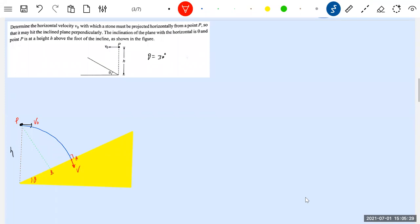I know how to solve this. It strikes normally. I think that is enough to solve this problem. So I'm going to resolve that initial velocity along the incline, parallel to incline. Let me resolve even the acceleration due to gravity also. So the acceleration due to gravity here will be g sin theta and g cos theta.